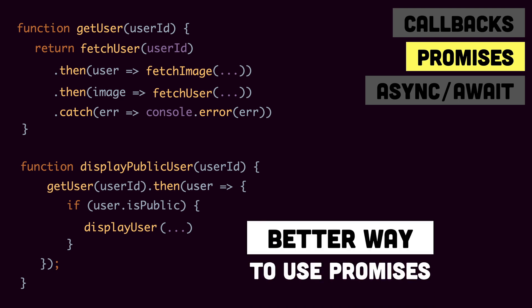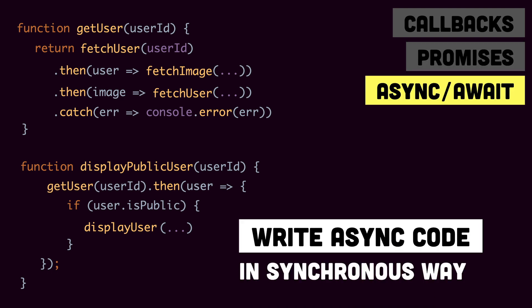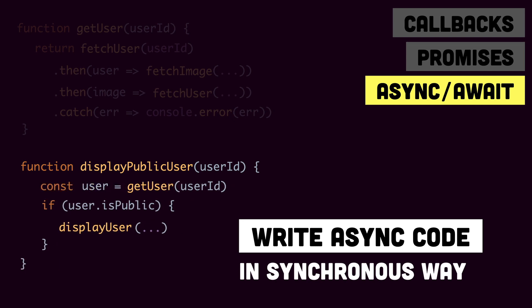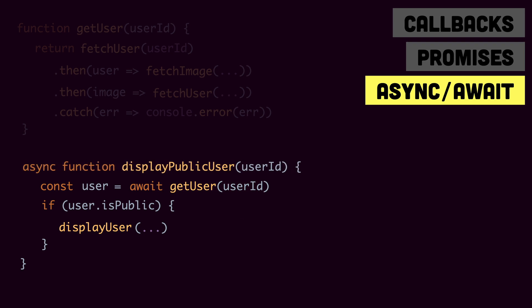What if there was a better way to use promises? What if we could write asynchronous code in the form of synchronous code? Async/await allows you to do that. If we were to write displayPublicUser without .then() in synchronous form, we'd have something like: const user = getUser, then use the user object however we want. To make this possible we put await in front of the promise call and async in front of the parent function. Whenever JavaScript comes across an await statement, it waits for the promise to be resolved, and once the value is received it moves on to the next steps.